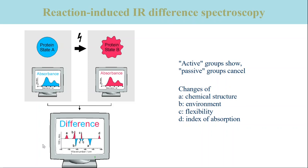The convention in the research field is that negative bands in the difference spectrum are characteristic of the initial state A, shown in blue, while positive bands reflect the states B during or after the reaction, shown in red.